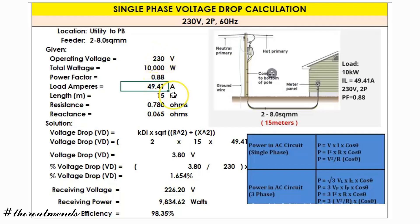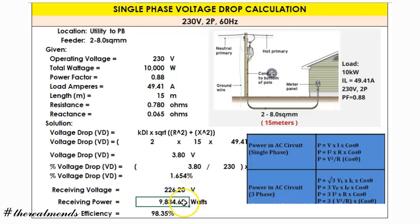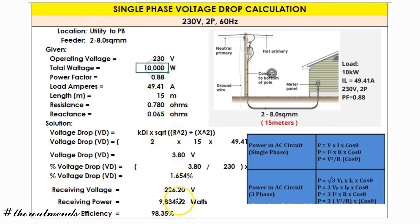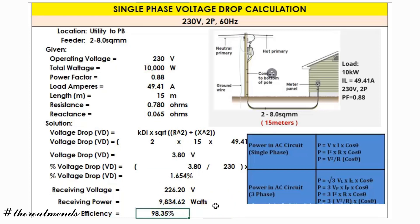The receiving power is 226.20 volts times 49.41 amperes times the power factor of 0.88, which gives a result of 9,834.62 watts at the receiving end. To get efficiency, divide power output by power input: 9,834 divided by 10,000 equals an efficiency of 98.35 percent.